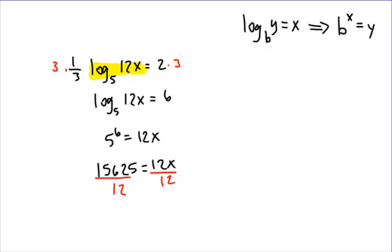Whatever number you get, you need to make sure that you show it to 3 decimal places. With logarithms, 4 decimal places is usually really nice because logarithms change so slowly. What I got for this problem, when I punch it in, is 1302.08 — and carrying more decimal places, that's 0.0833 repeating. That's what I would like to see when you're doing your math.